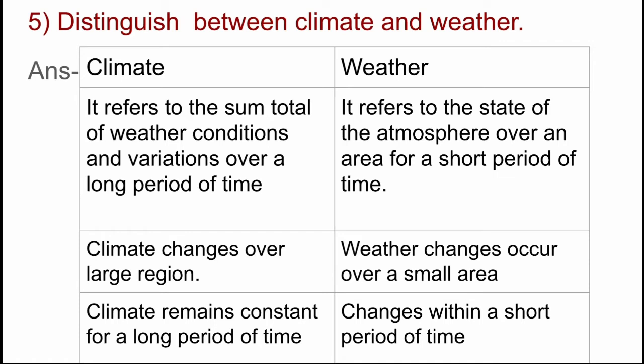Distinguish between climate and weather. Climate: It refers to the sum total of weather conditions and variations over a long period of time. Weather: It refers to the state of the atmosphere over an area for a short period of time. Climate changes over a large region. Weather changes occur over a small region.